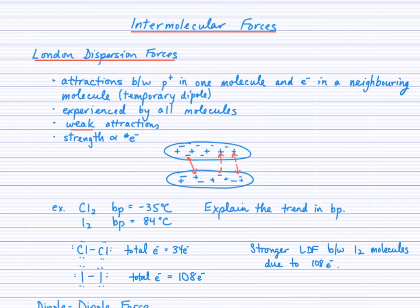Looking at the periodic table, chlorine has atomic number 17 — that means 17 protons in each chlorine nucleus and 17 electrons per chlorine atom. With two chlorine atoms in the molecule, that's 34 electrons total. For iodine, a similar analysis shows 106 electrons. Both molecules are non-polar and therefore only London forces are considered. With more electrons, there will be stronger London forces between I₂ molecules compared to Cl₂.